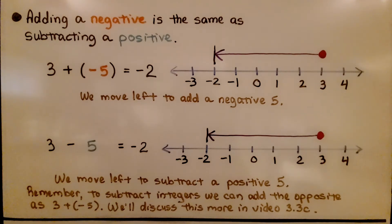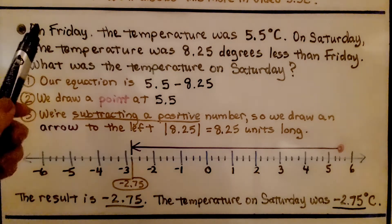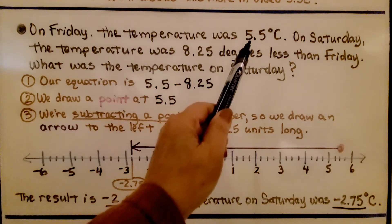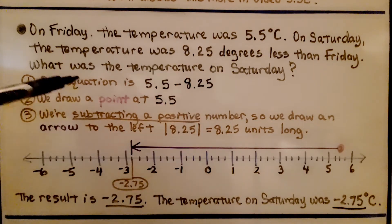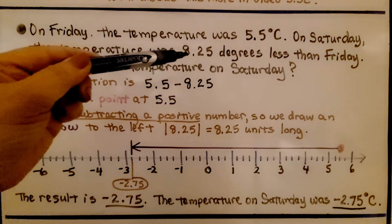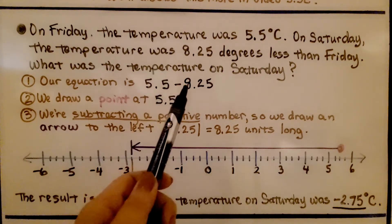We'll discuss this more in video 3.3c, coming up in a couple of lessons. Here's our first example: On Friday, the temperature was 5 and 5 tenths degrees Celsius. On Saturday, the temperature was 8 and 25 hundredths degrees less than Friday. What was the temperature on Saturday? On Friday it was 5.5 degrees Celsius, and on Saturday it was 8.25 degrees less. We need to find 8.25 less than 5.5, so our equation is 5.5 minus 8.25.